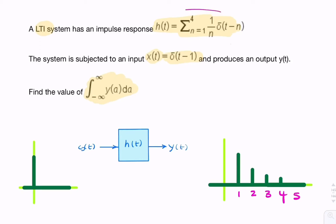Let's first look at the impulse response. It's a series of impulses, each progressively delayed by one second with amplitudes of 1 over n. Because the summation is from n equals 1 to 4, we have amplitudes of 1, 1 over 2, 1 over 3, and 1 over 4.